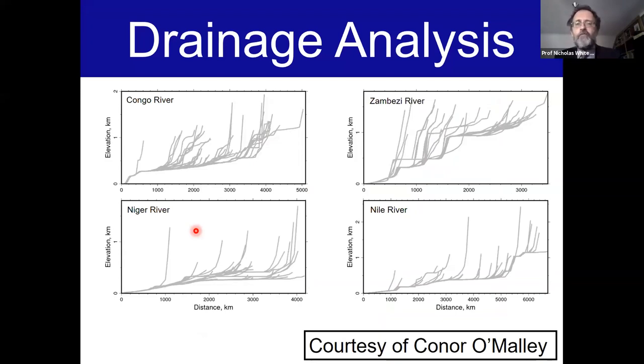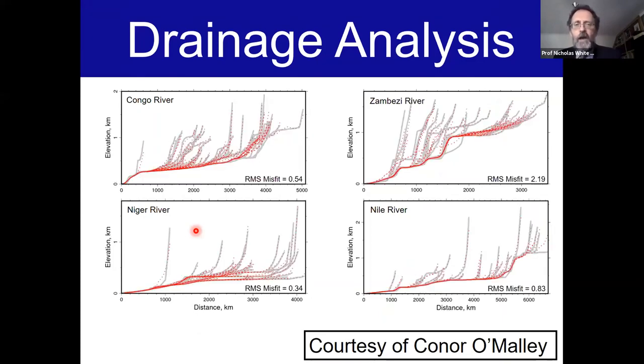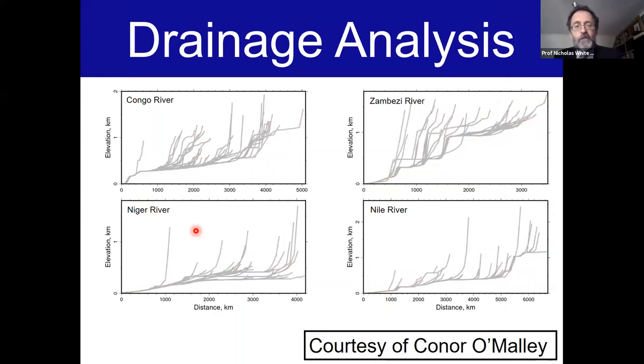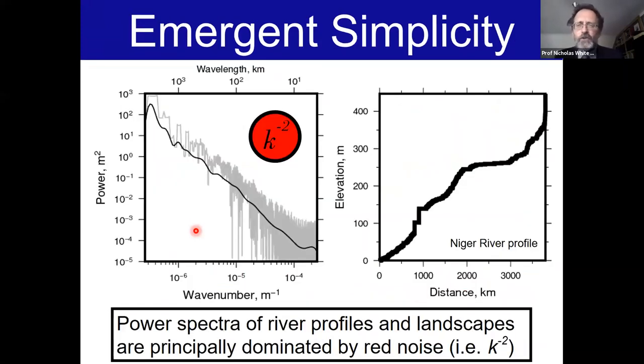In this movie, you're looking at the uplift history of Africa that you determine from many river profiles. It does a pretty good job at matching the actual topography of Africa today, and that pretty good job is predicated on fitting many river profiles. Here are four sets of river profiles from four major catchments in Africa.